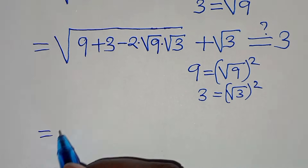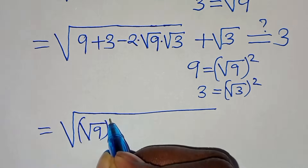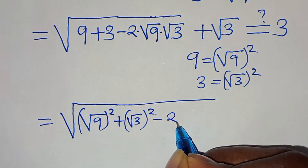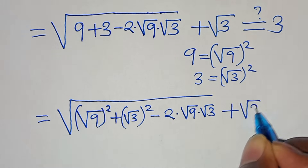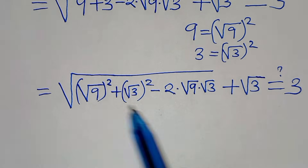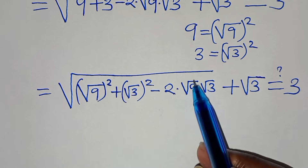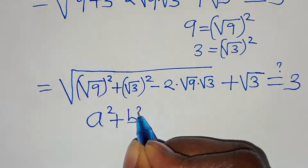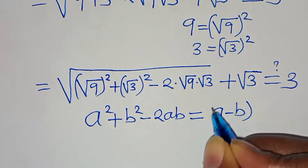Now, (square root of 9) squared plus (square root of 3) squared minus 2 times square root of 9 times square root of 3 is in the form a squared plus b squared minus 2ab, which can be expressed as (a minus b) squared.